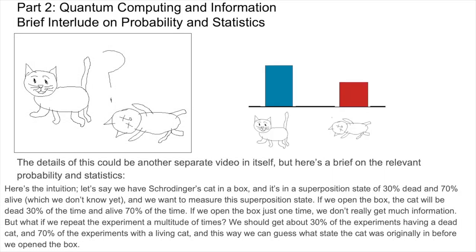Here's the intuition. Let's say we have Schrodinger's cat in a box and it's in a superposition state of 30% dead and 70% alive, which we don't know yet of course, and we want to measure this superposition state and deduce what it is. If we open the box, the cat will be dead 30% of the time and alive 70% of the time. If we open the box just one time, we don't really get much information. But what if we repeat the experiment a multitude of times? We should get about 30% of the experiments having a dead cat and 70% of the experiments with a living cat, and this way we can guess what state the cat was originally in before we open the box.